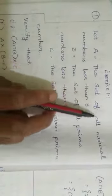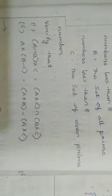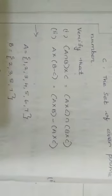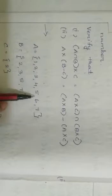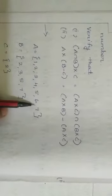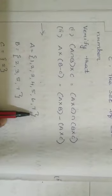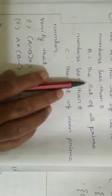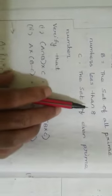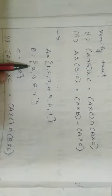A equals the set of all natural numbers less than 8. We know that natural numbers start from 1. So the values of A are 1, 2, 3, 4, 5, 6, 7 — up to 7, since they asked for less than 8. Next, B is the set of all prime numbers less than 8, so B = {2, 3, 5, 7}.